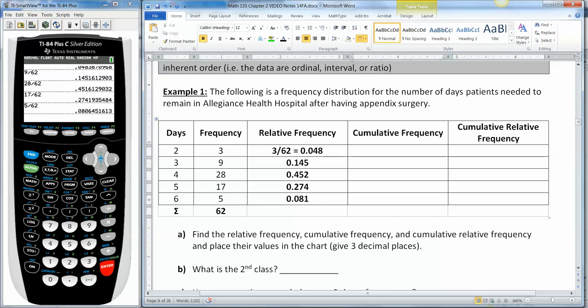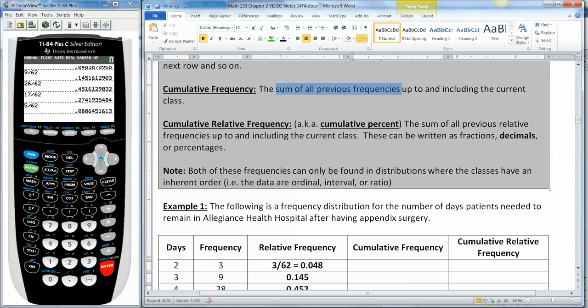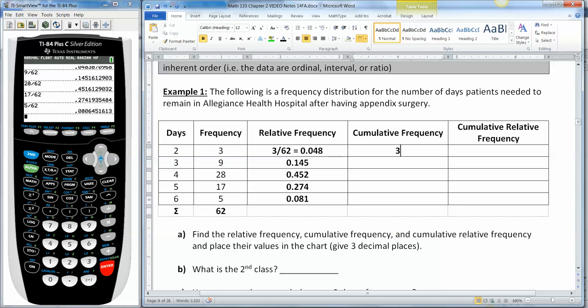All right, now I'm going to find the cumulative frequency. Cumulative frequency is the sum of all the previous frequencies up to and including the current class. The first class is just the same number you already had, three. But now for the next class it's 12. How do I get 12? Well I'm accumulating. I'm adding up the frequencies. So 3 plus 9 makes 12. The next one's going to be 40 because 3 plus 9 plus 28 makes 40. The next one's 57 and the next one's 62. By the end I should have 62 because that's what I said the sum added up to.